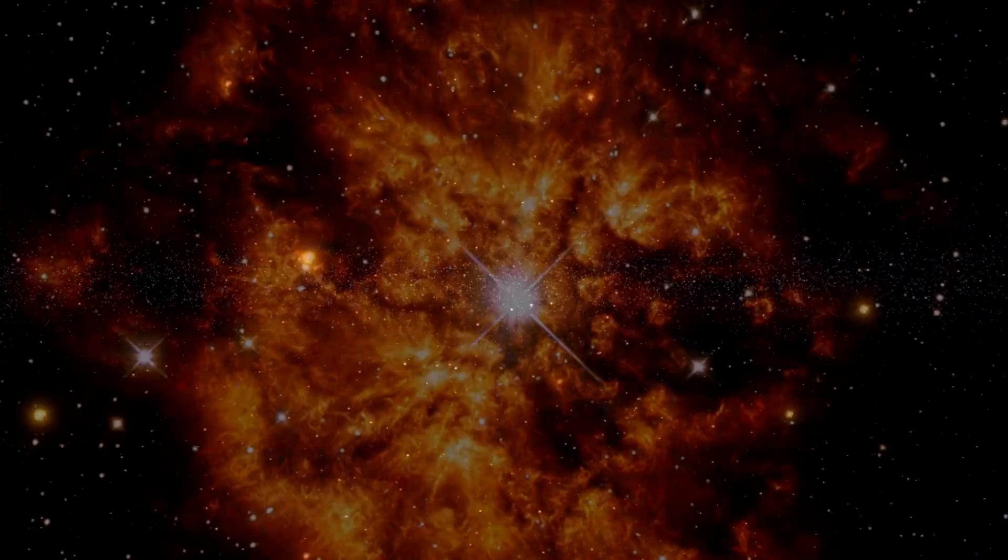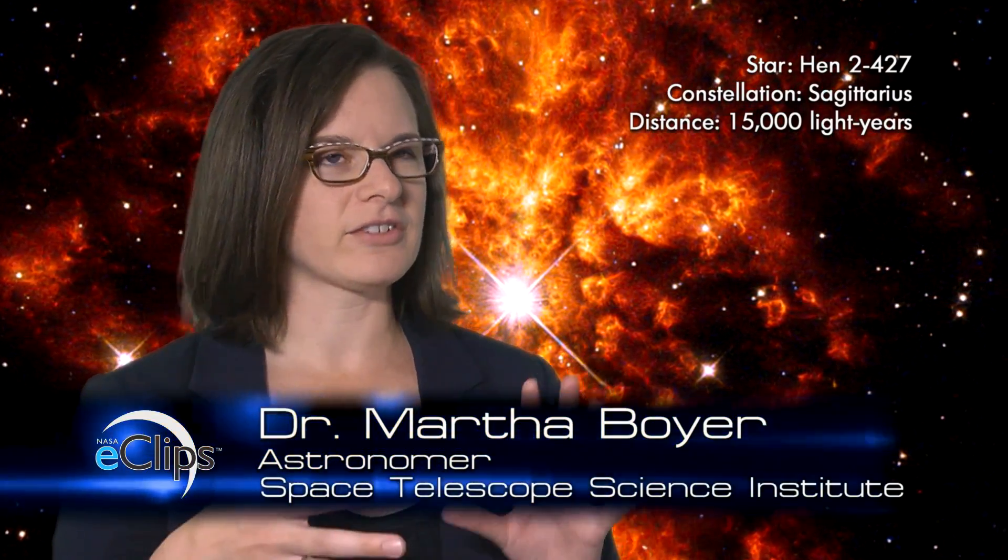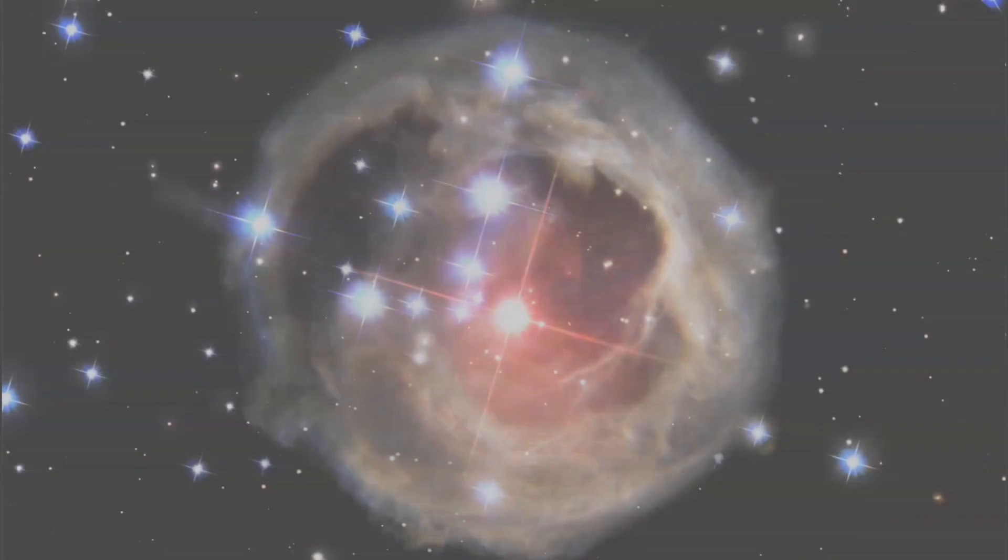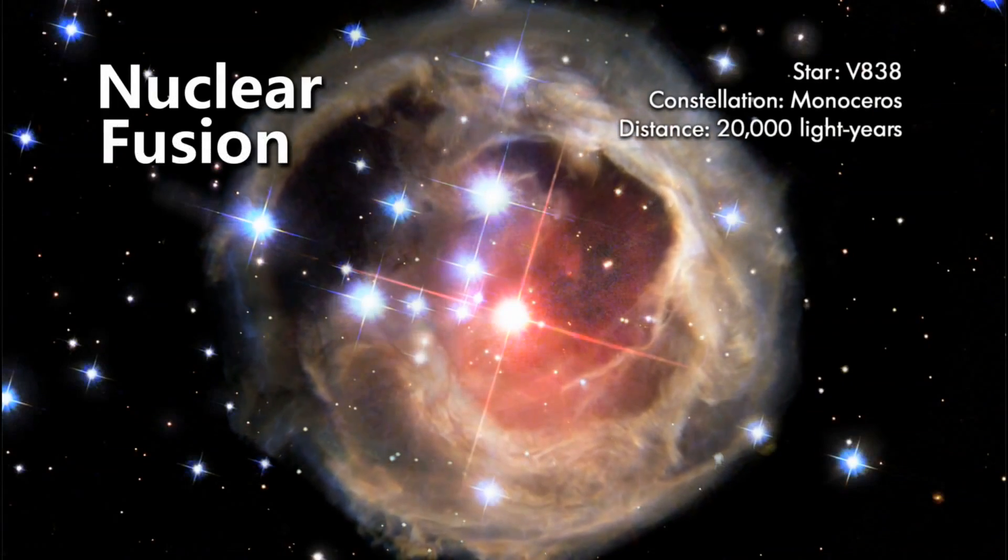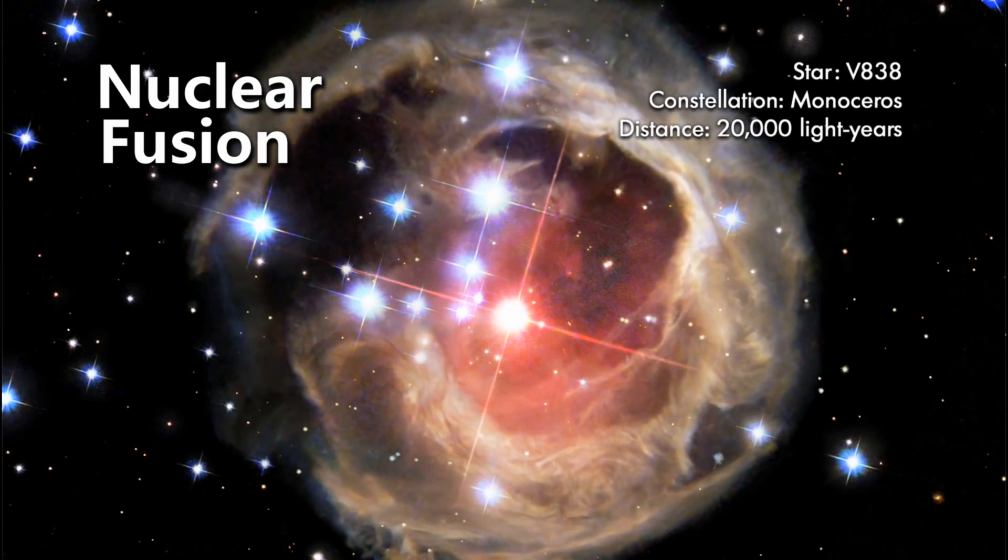A star is basically a nuclear furnace. It's this collection of mostly hydrogen gas. And at the center, it's really, really hot and dense, where you can actually get nuclear fusion occurring. And that's how you get the heat and the light from the star.